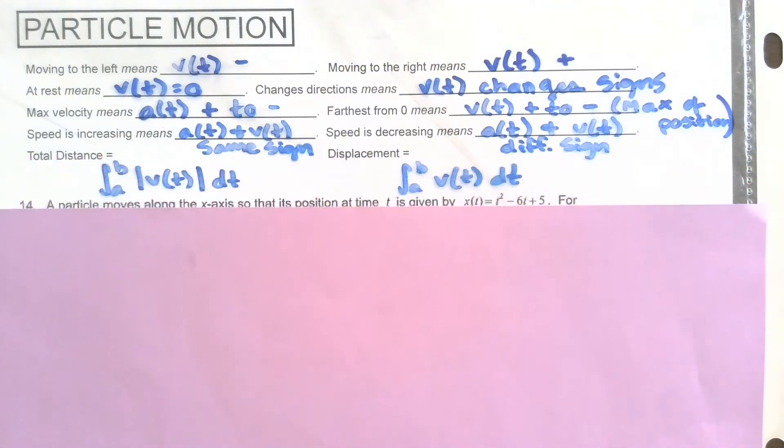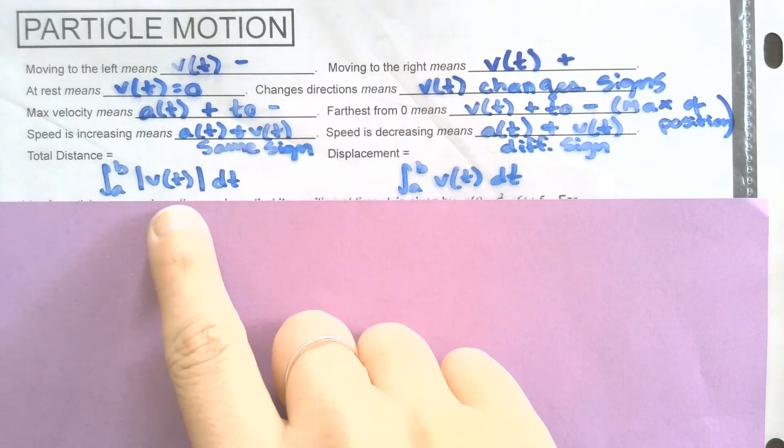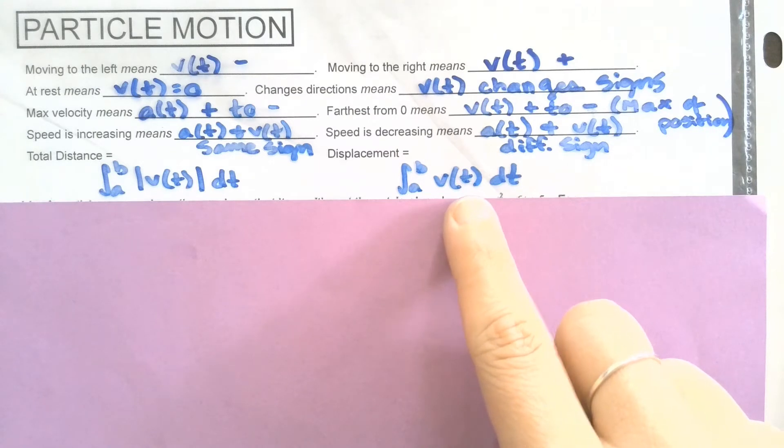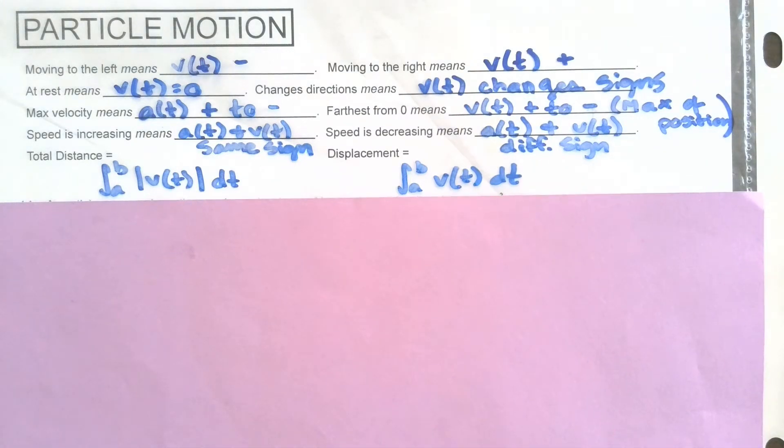And then the last thing is that for total distance, we're looking at that integral of the absolute value of v of t. So we're going to make any distance, whether it's left or right, positive. Whereas if we're looking for just displacement, so where it ended up, then we're going to just take the integral of v of t because we don't care whether those negatives are thrown in or not if we're looking at displacement.